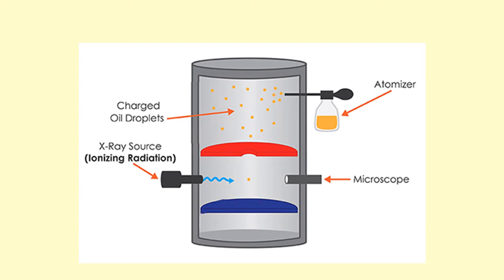When you spray using the atomizer, oil droplets form, and because of friction between the oil and the atomizer, these droplets will either have gained one, two, or three electrons, or lost electrons — so they become charged. They then fall through the gap and eventually reach terminal velocity. The X-ray source can also be used to charge them by ionizing the surrounding air, which then transfers or takes electrons from the oil droplets. As the droplet falls, it has its weight mg and a drag force from Stokes' law.